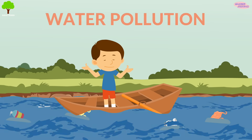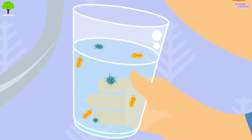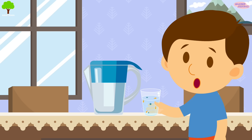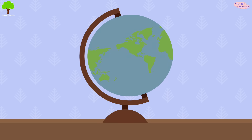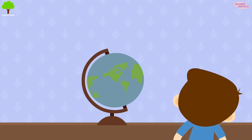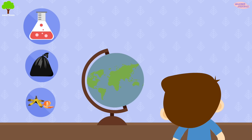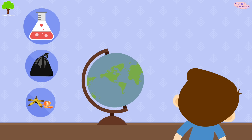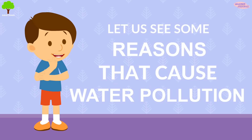Today, we'll learn about water pollution. Clean water is mandatory for life. When water gets polluted, it becomes unhealthy for everyone. Water pollution has become an increasing problem on our Earth, which is affecting human and animal lives. Water pollution occurs when chemicals, waste, or other particles cause a body of water to become harmful to everybody. Let's see the causes of water pollution.